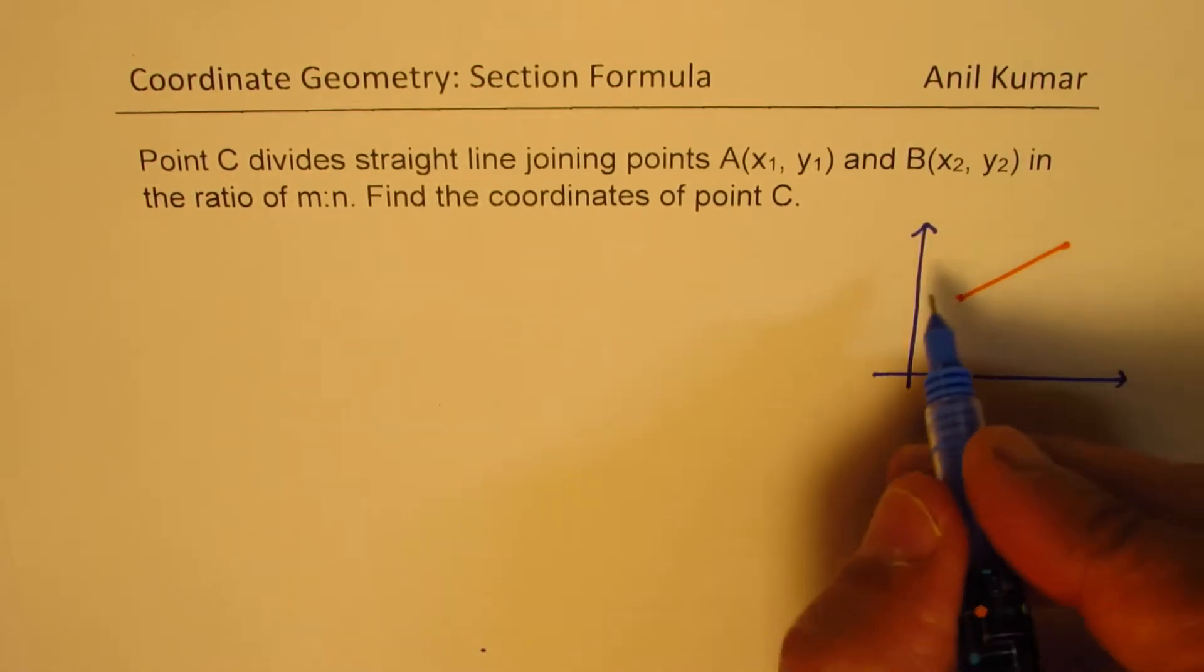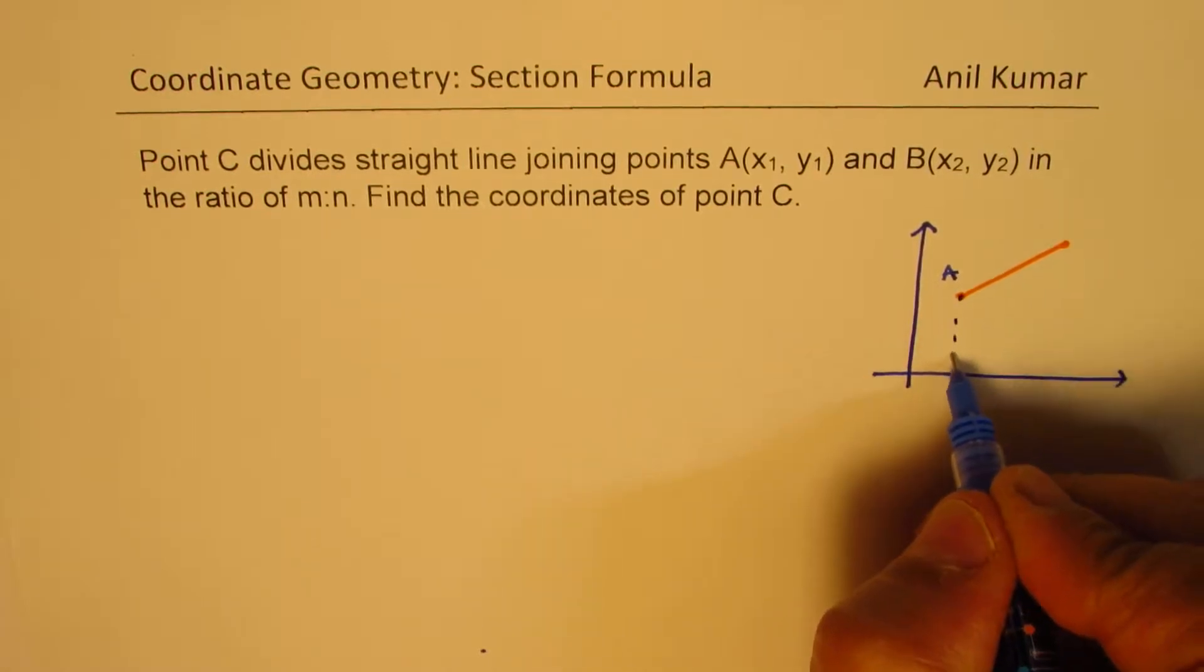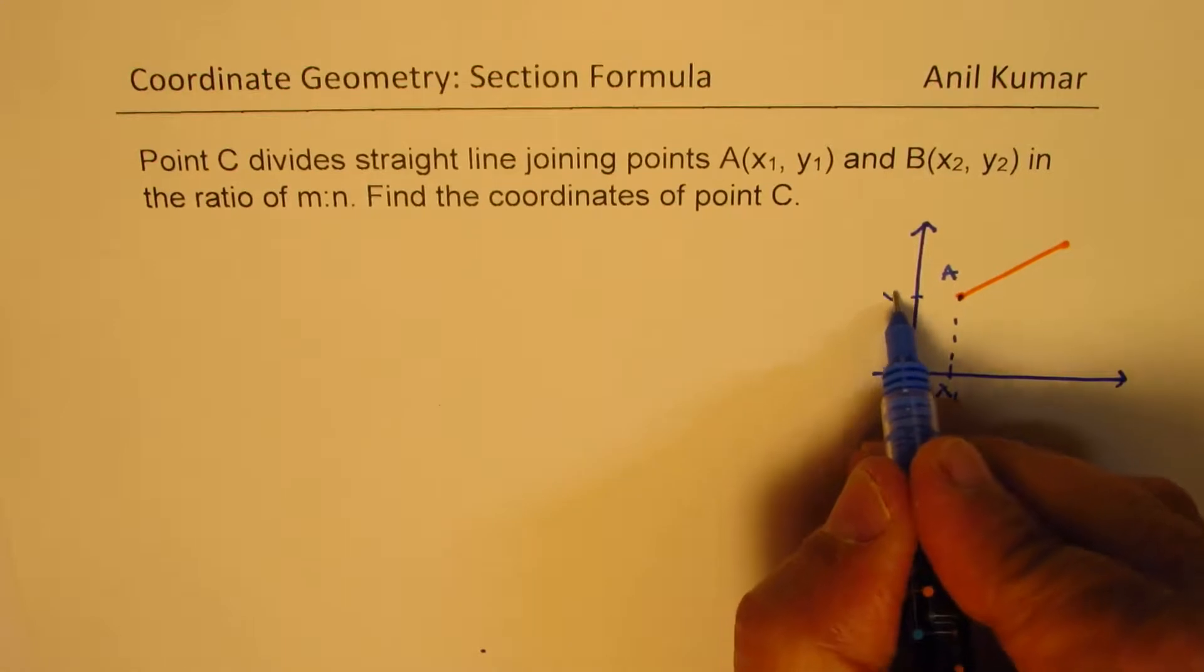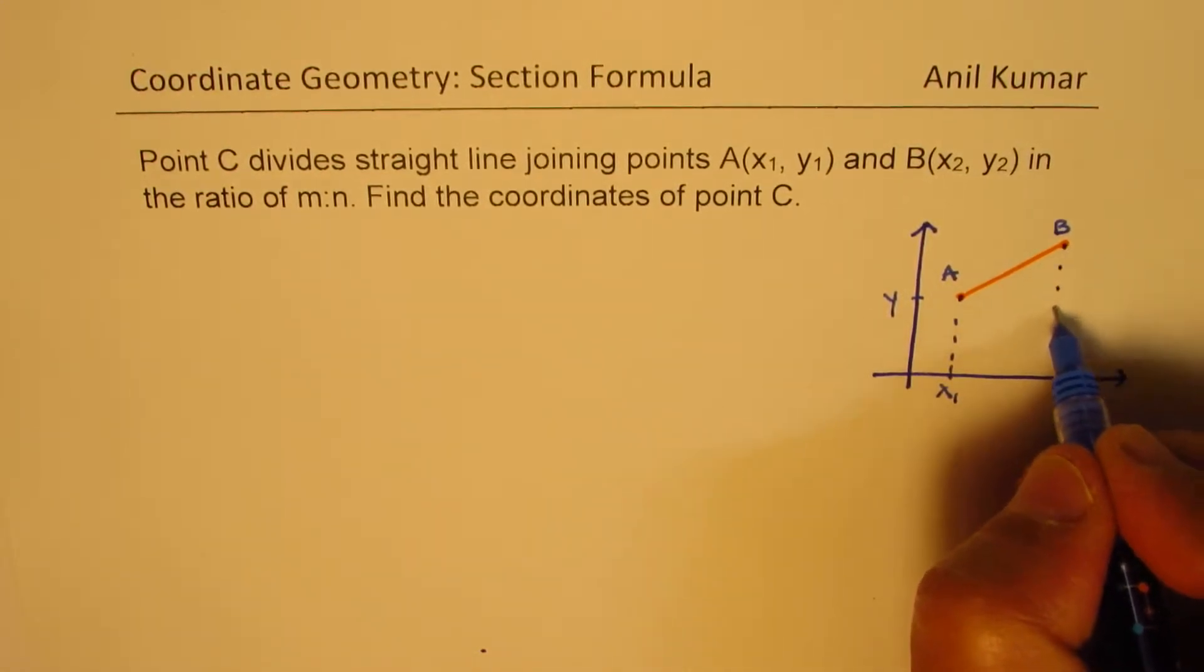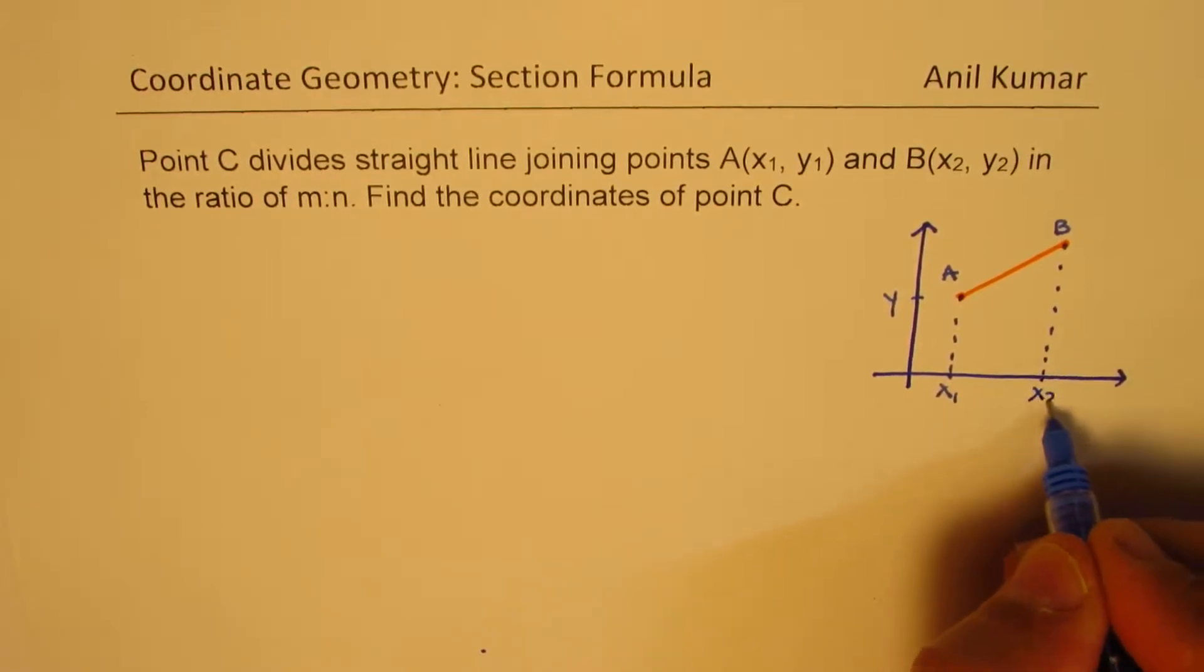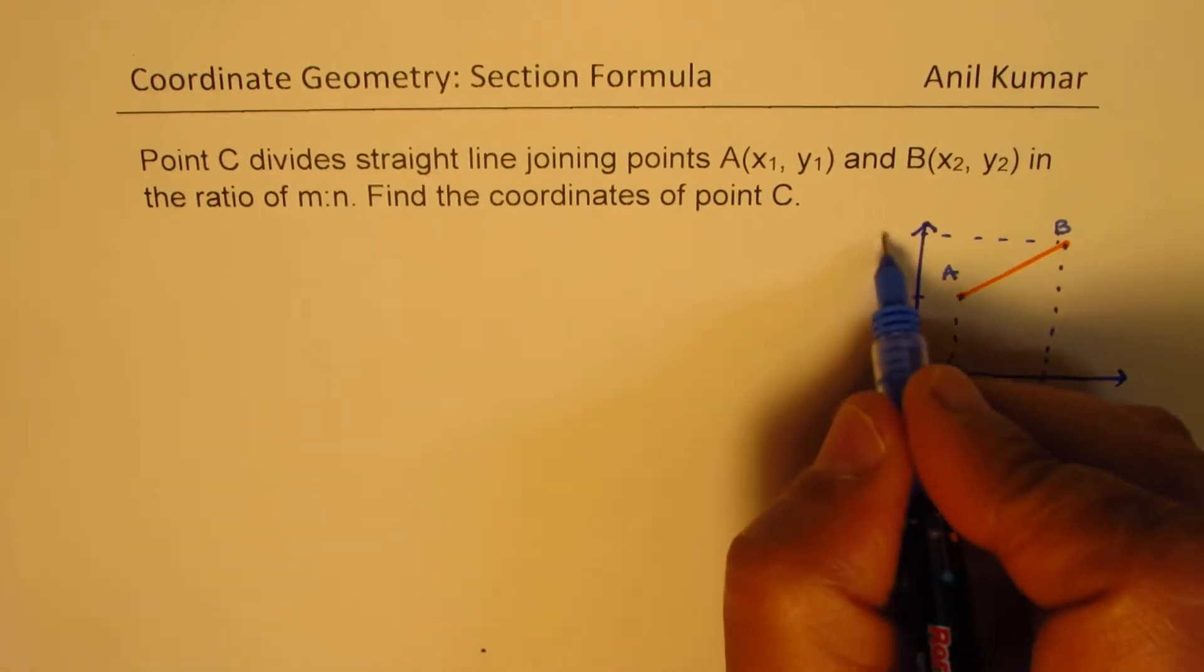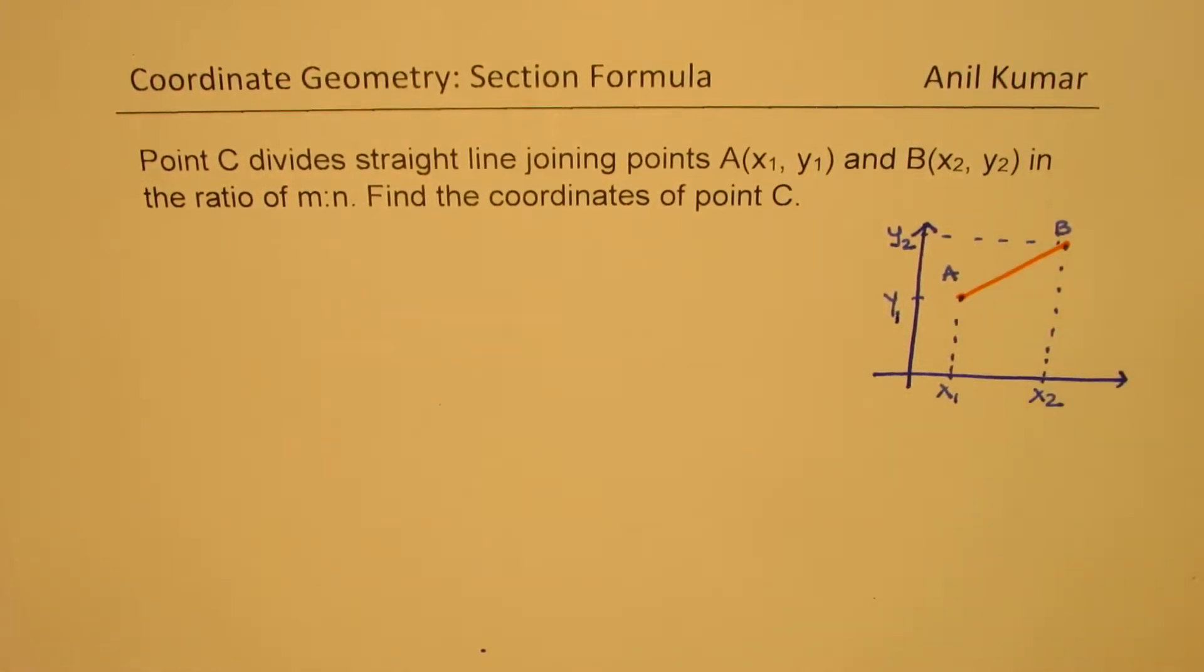So the coordinates of A, let's say they are x1 and y1. The coordinates of B are x2, y2. So these are the coordinates of A and B.